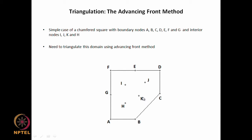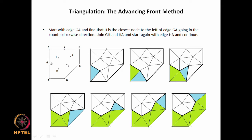We want to ensure no triangulation goes outside the domain — for example, joining K with B or C in a way that crosses outside. We start with edge G-A. All the boundary edges A-B, B-C, C-D, D-E, E-F, F-G, G-A form the initial front. We find all boundary and interior nodes lying to the left of edge G-A, and since we are going in the counterclockwise direction, all interior edges lie to the left of this edge.